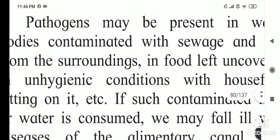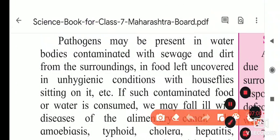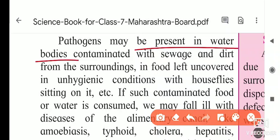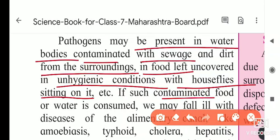The next point is pathogens — disease-producing microorganisms. Pathogens are microorganisms that spread diseases. Pathogens may be present in water bodies contaminated with sewage and dirt, in food left uncovered, and in unhygienic conditions. House flies sitting on such food also spread pathogens. Consuming such contaminated food or water may make us fall ill.